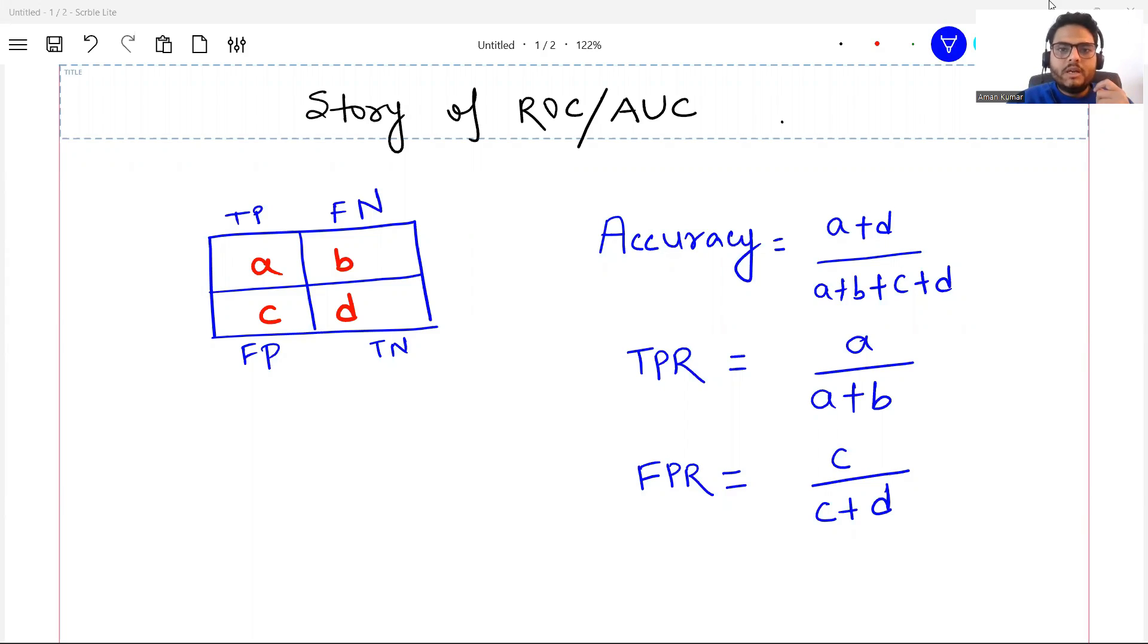When you want to evaluate a classification model, all these things are basic things that you see. This is known as a confusion matrix. All this story you know, right? TP, FN, FP, TN.